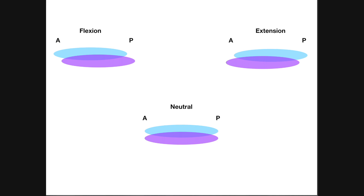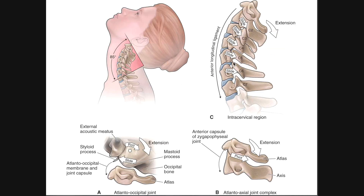Going from a neutral position to extension, the superior part of the disc actually translates posteriorly relative to the inferior part of the disc below. So in downsloping, the vertebra above is going to slide a little bit posteriorly relative to the vertebra below. For example, considering C4-C5 during downsloping — which occurs during extension — C4 would slide posteriorly relative to C5.